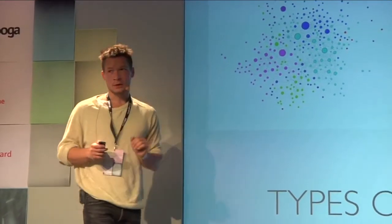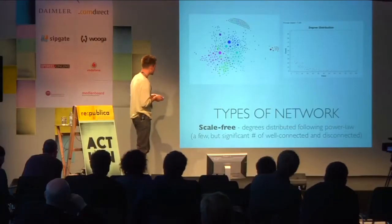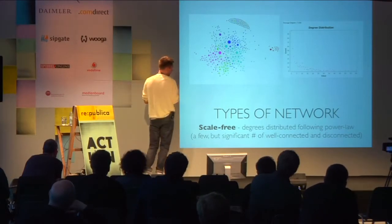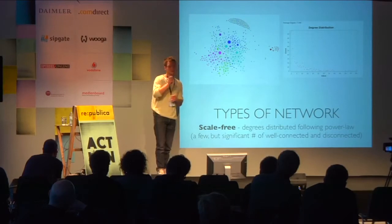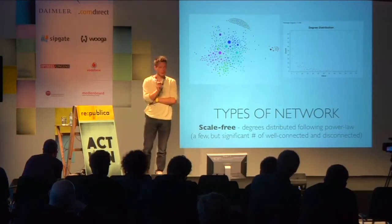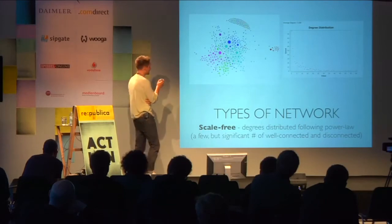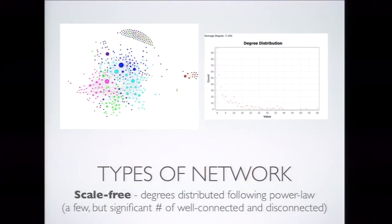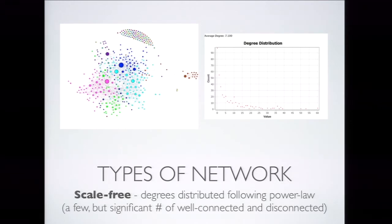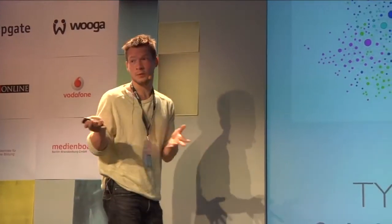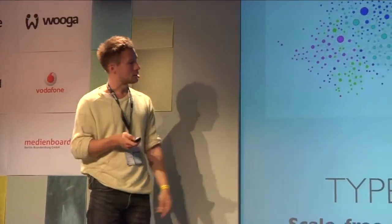I'll go quickly through the different types of networks that exist. One of the most common is the scale-free network, where most nodes inside the network have very few connections, but a few significant nodes are very well connected — the number of connections among nodes is distributed unequally. They have a very varied degree of influence in the network. The internet is structured like this: you have websites like Twitter, Google, and Facebook where most people go, while most websites are maybe only visited by the people who created them.